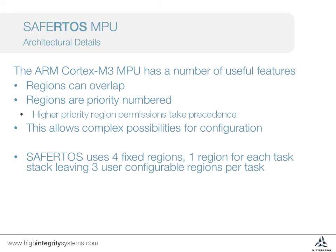SafeRTOS makes use of four fixed regions, which are set up when the scheduler is started, and four regions are changed on every context switch. One of these is required for the task stack, leaving three user-definable regions for every new task.